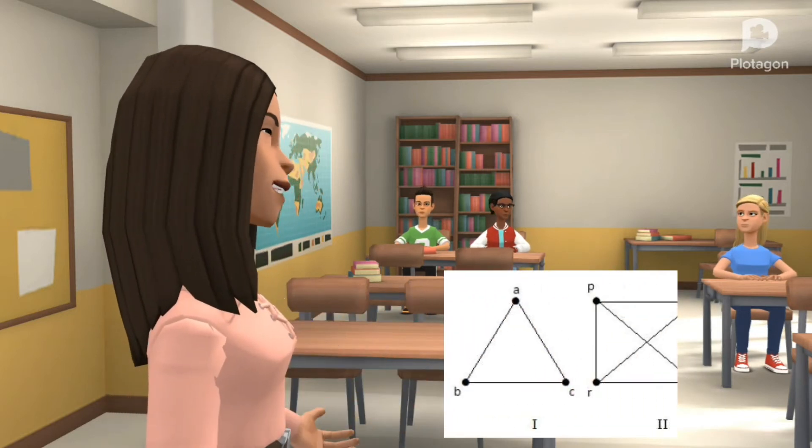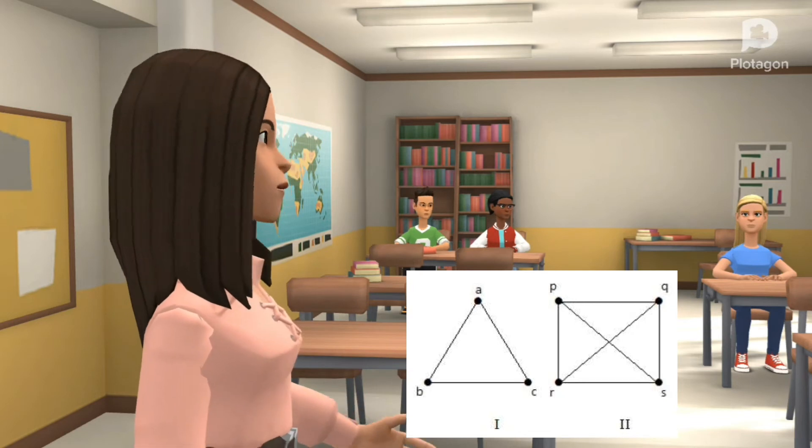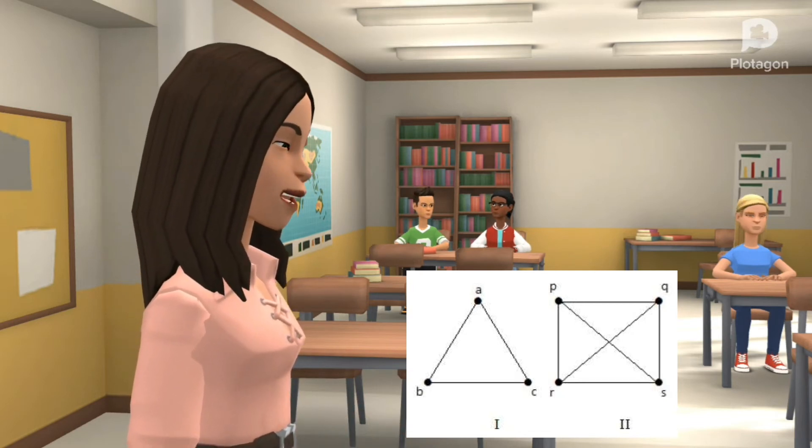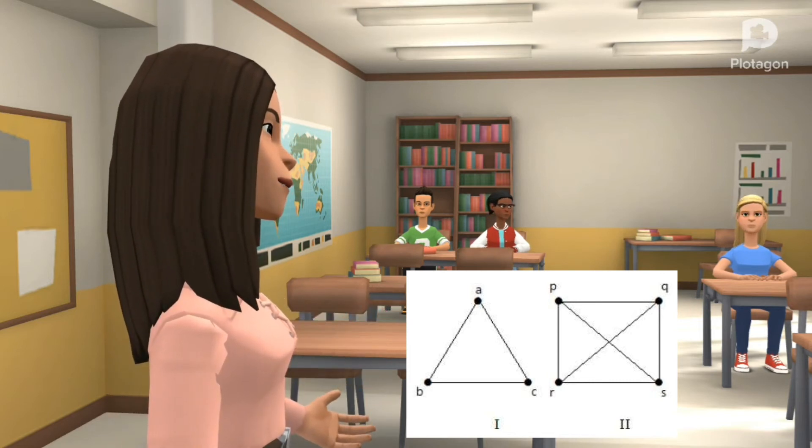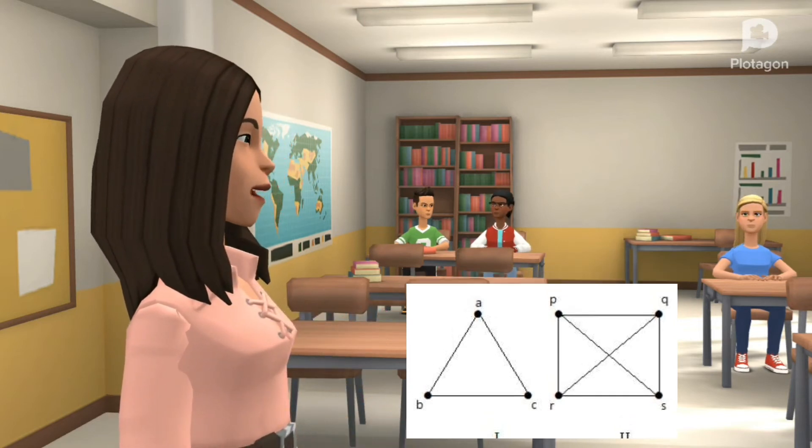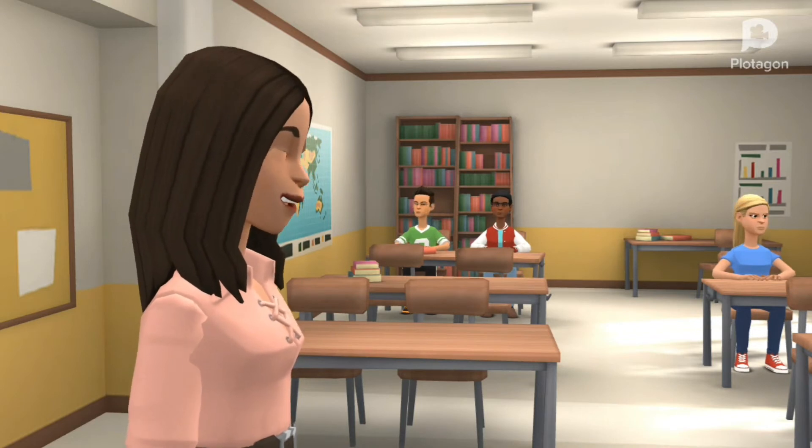Second, the complete graph. For a simple graph to be a complete graph, it is important that every pair of its distinct vertices are adjacent to each other. In simple words, each vertex is connected to the remaining vertices.